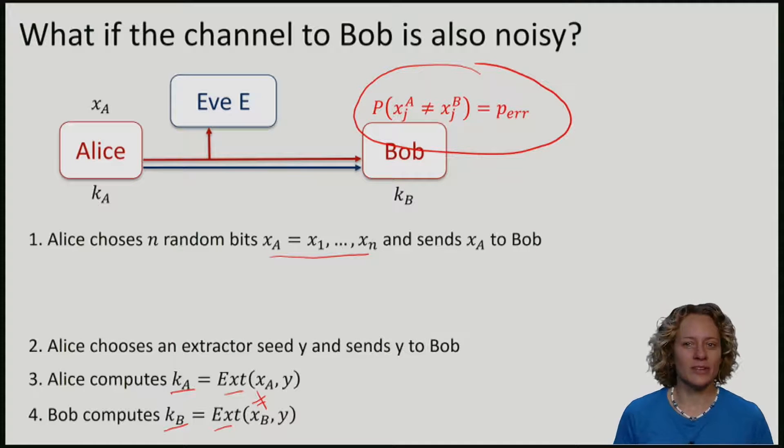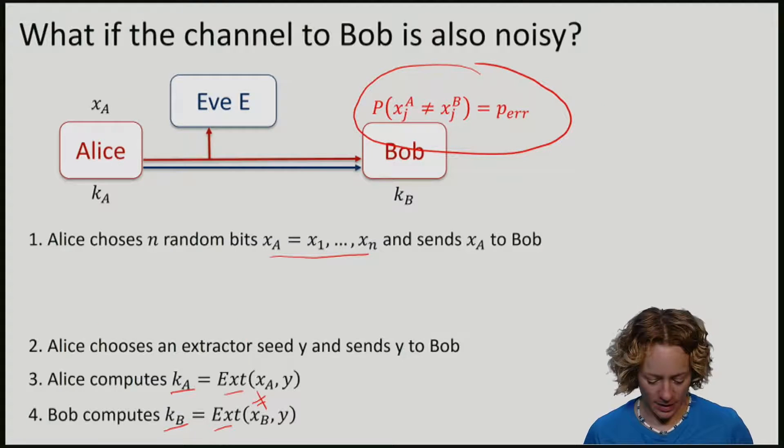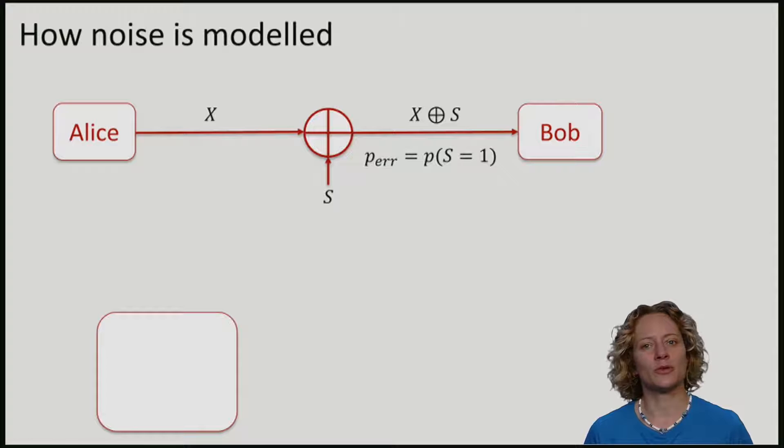To have a look at how to fix this, let's first try and model this noise more carefully. In key distribution protocols, and this will also be the case for quantum key distribution, we model noise on the channel from Alice to Bob by a bit flip operation.